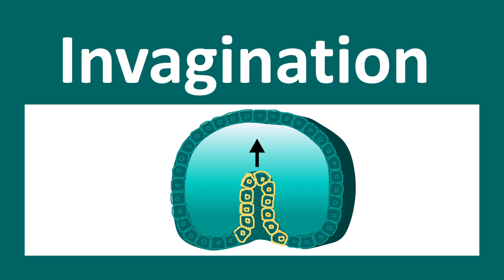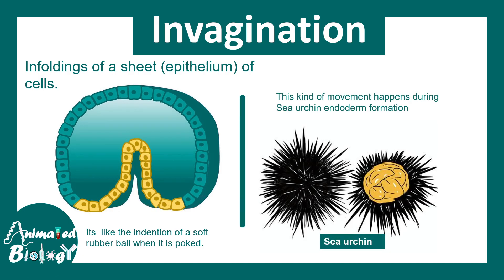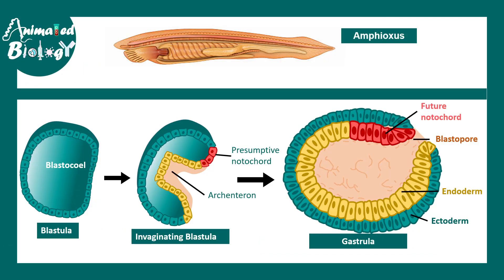The first type of gastrulation movement we are going to look at is invagination. As the name suggests, invagination simply means in-folding of a sheet of cells — just like in this animation, you can see the yellow cells are invaginating inwards, similar to touching a rubber ball and creating a depression when you poke it. This kind of movement happens during sea urchin endoderm formation and can also be found in amphioxus, where the blastula gives rise to the gastrula and the endoderm region invaginates inside to eventually form the archenteron.